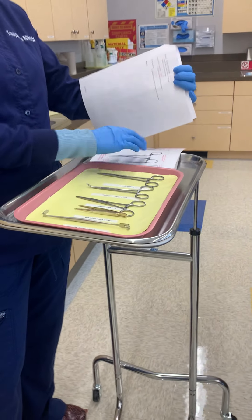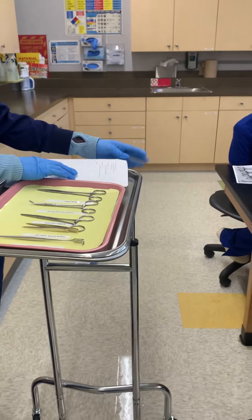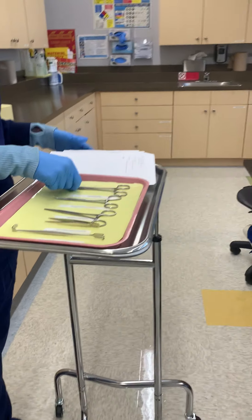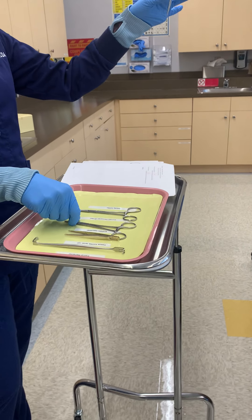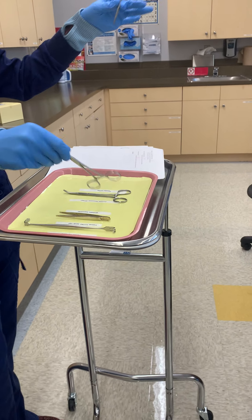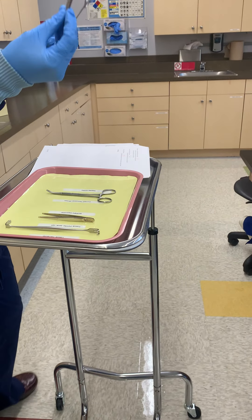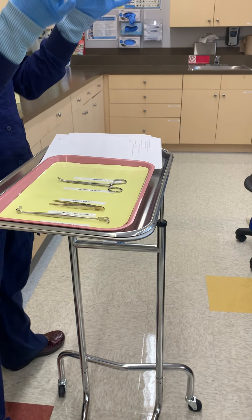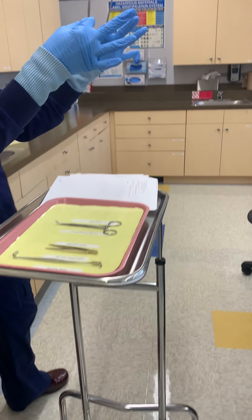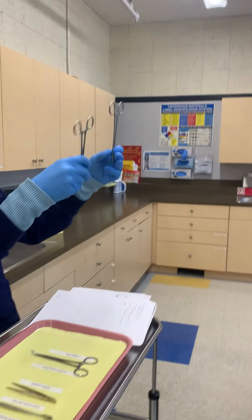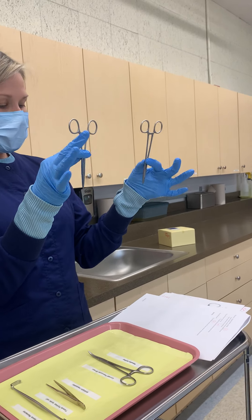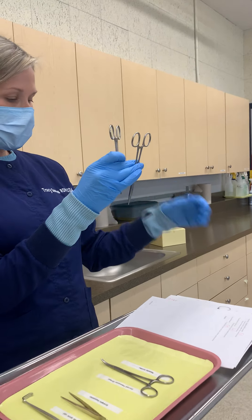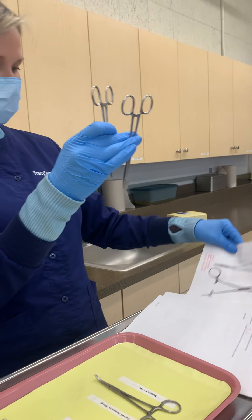The one that we skipped over is the needle holder. This is the needle holder, and this is your straight hemostat. They kind of look exactly alike, so you're going to want to make some notes.